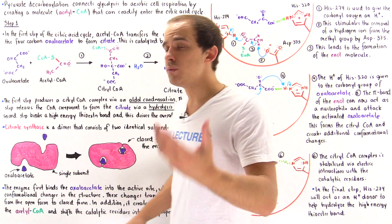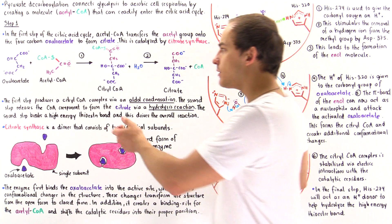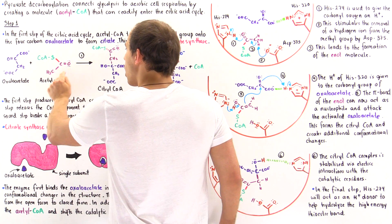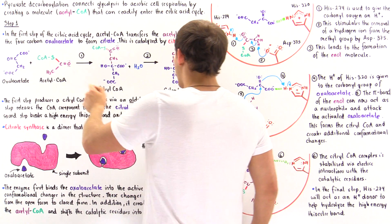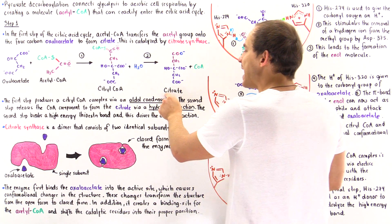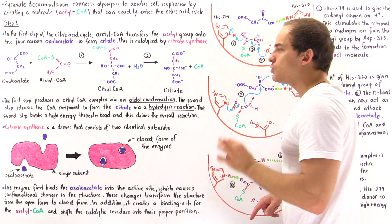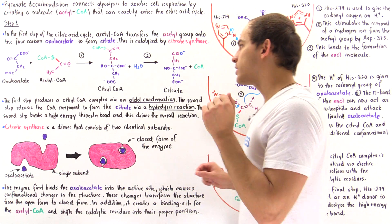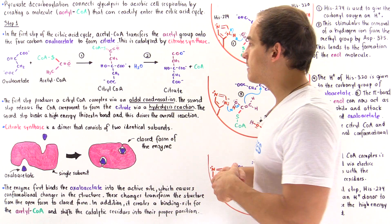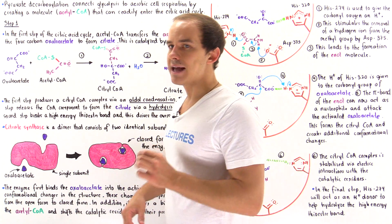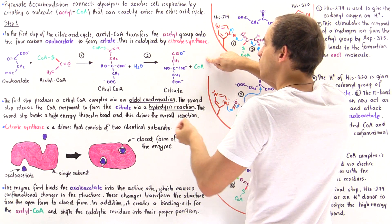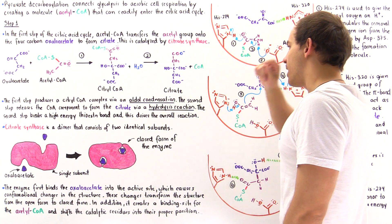This is the same oxaloacetate we saw when we discussed gluconeogenesis. The four-carbon oxaloacetate is combined with the two-carbon acetyl group of acetyl coenzyme A to form a six-carbon molecule known as citrate. Citrate is the conjugate base of citric acid, which is a tricarboxylic acid — that's why the citric acid cycle is also known as the TCA cycle. Coenzyme A is regenerated and can be reused in pyruvate decarboxylation.